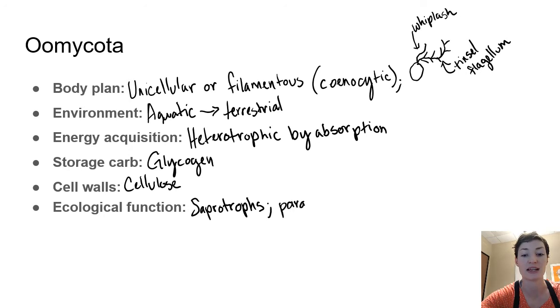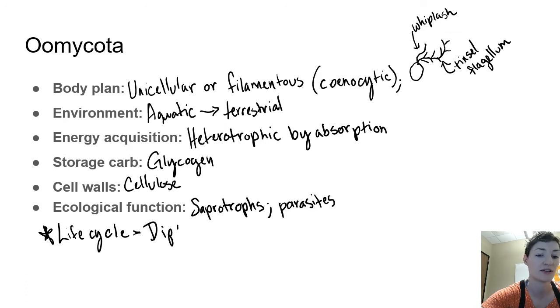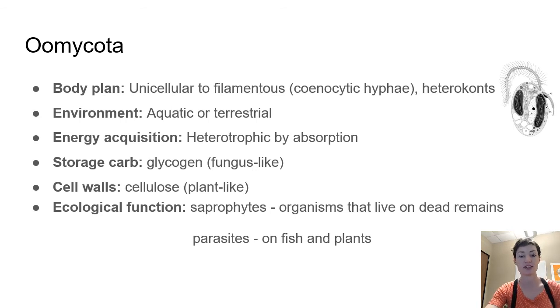Ecologically they have a very similar function to fungi - they're saprotrophs which means they eat dead stuff, and some very important parasites, notably no mutualists that I know of. Something else to throw in here - their life cycle which we're going to cover is diplontic. Fungi, true fungi, have a haplontic life cycle where they're either haploid or dikaryotic, but most of the time oomycetes are going to be diploid.